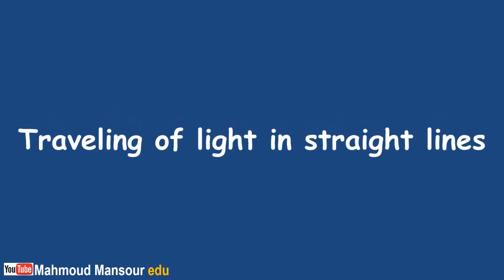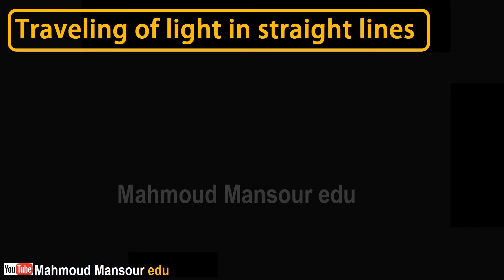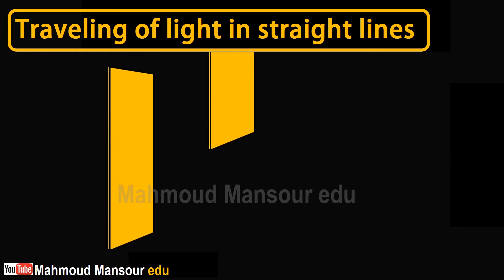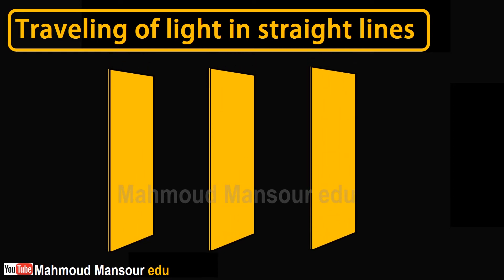Traveling of light in straight lines. This activity is to prove that light travels in straight lines. Steps: Bring three wooden or carton partitions, each one has a centered hole.